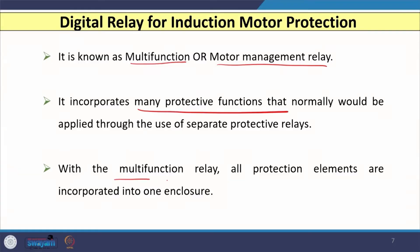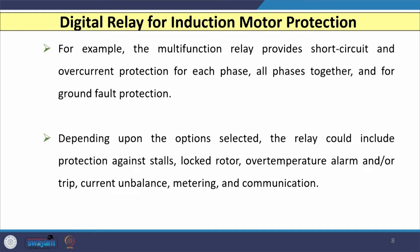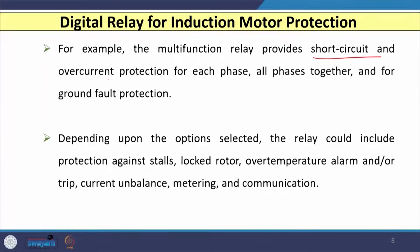When using electromechanical relays, a separate relay was needed for overcurrent, another for locked rotor protection, and so on. However, a digital relay incorporates all functions and features in a single unit. All the protection elements are incorporated in one enclosure — that is the key feature of the digital relay. For example, a multifunction or motor management digital relay includes short circuit overcurrent protection for individual phases, all phases, and ground fault — all clubbed in a single unit.